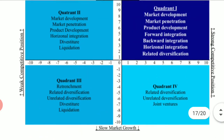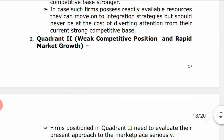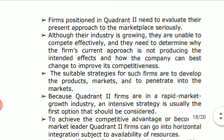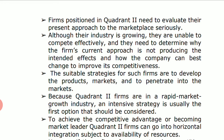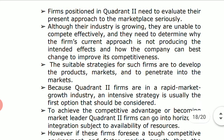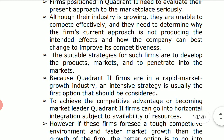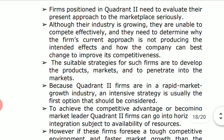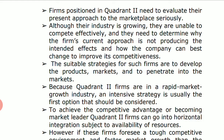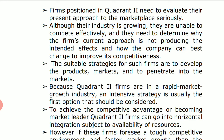Moving anticlockwise to quadrant two, we see weak competitive position but rapid market growth. Firms positioned in quadrant two need to evaluate their present approach to the marketplace seriously. Although their industry is growing, they are unable to compete effectively. They need to determine why the firm's current approach is not producing the intended effect and how to best improve competitiveness.